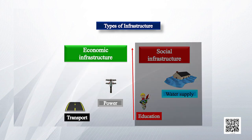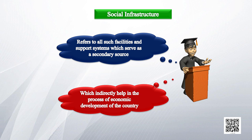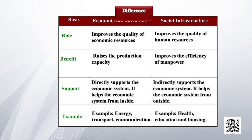Infrastructure is basically of two types. The first type is economic infrastructure and the second is social infrastructure. Economic infrastructure directly contributes to GDP, while social infrastructure indirectly contributes to GDP. Economic infrastructure helps the economy from within, but social infrastructure helps from outside. Economic infrastructure increases the quality of economic resources, while social infrastructure increases the quality of manpower. Examples of economic infrastructure are roads, railways, communication, and banking. Examples of social infrastructure are health, education, sanitation, and healthy drinking water.